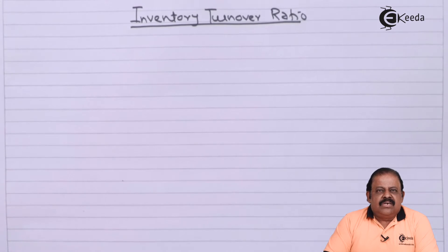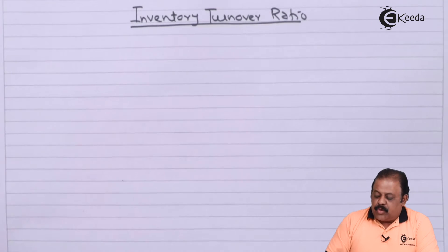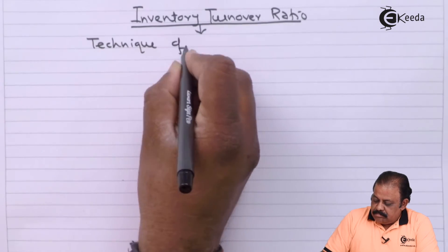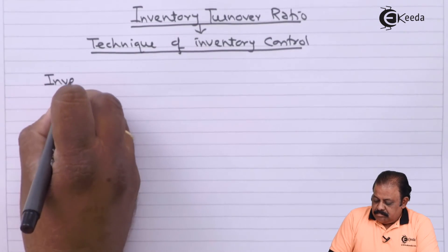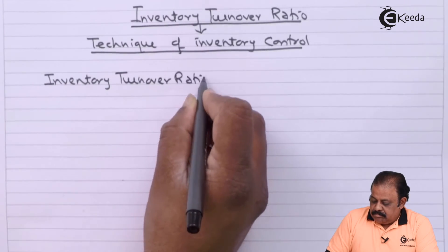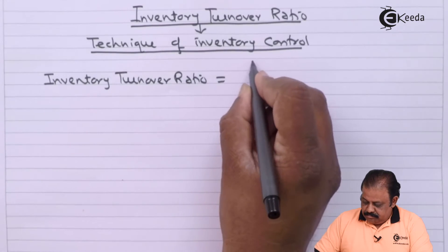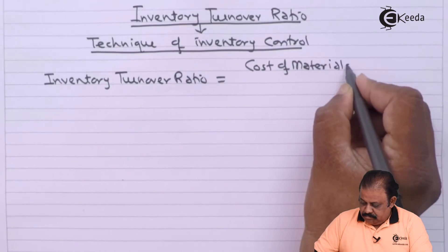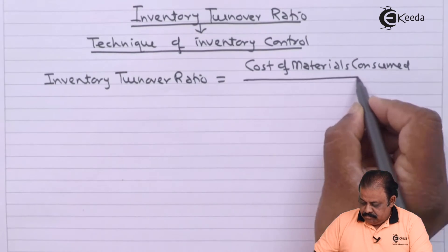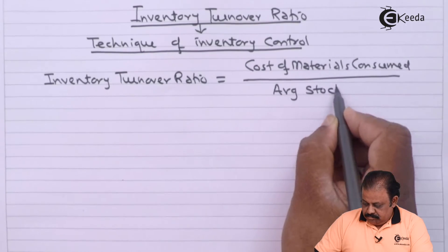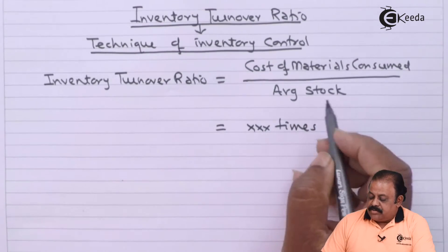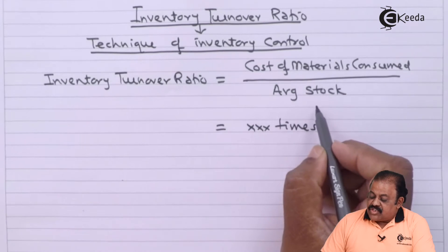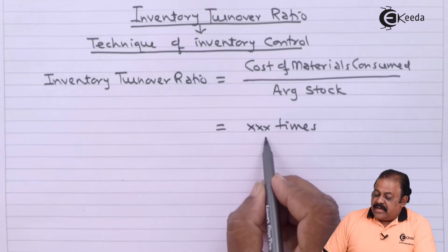Inventory Turnover Ratio is one of the techniques used by management for inventory control. The formula is: cost of material consumed during the period divided by average stock held during the period. The answer is usually expressed in times.